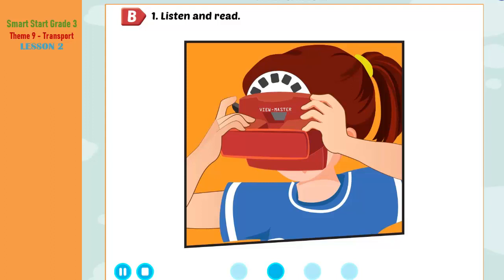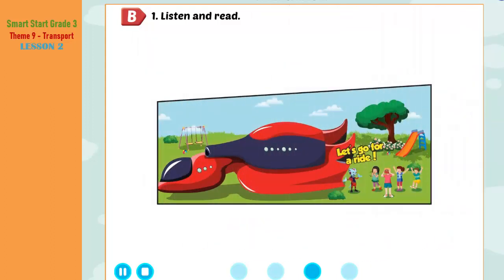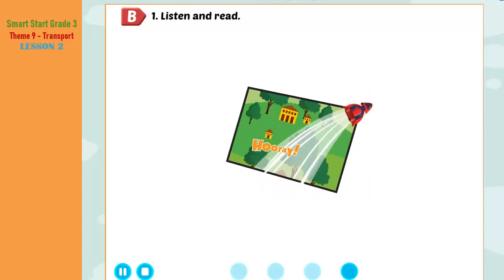And you, Tom? What can you see? I can see five yellow race cars. Alfie? Alfie? I can see one red spaceship. Let's go for a ride! Hooray!